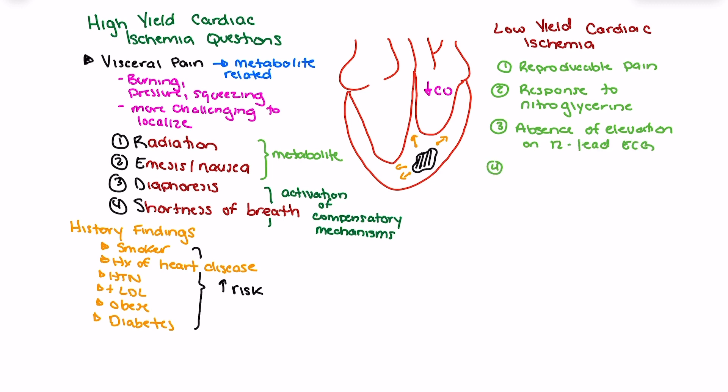A common myth is that radiation must go to the left arm. Using radiation to the right arm as a factor to rule someone out for cardiac ischemia is a poor use of assessment tools. In fact, radiation to the right arm is actually more common in patients who have cardiac ischemia. The high yield piece is simply the presence of radiation — where it goes is less relevant. Whether pain radiates to the left arm, right arm, jaw, neck, or back, the presence of that radiation is high yield for cardiac ischemia.